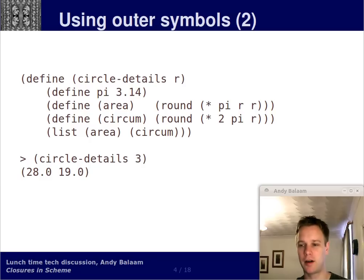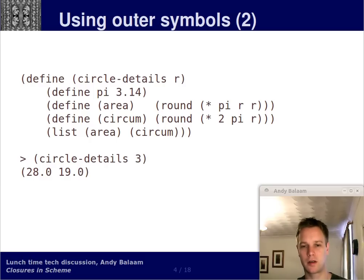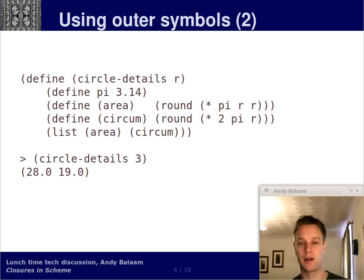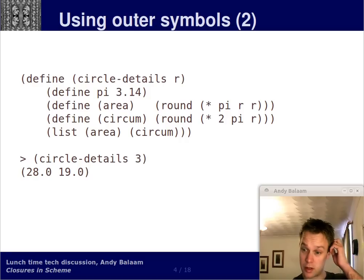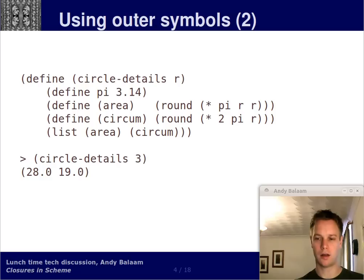We've also got a procedure called circumference which takes no arguments and makes use of the round built-in procedure, the pi symbol, and the r symbol, just like area does. Then in the body of this function, it runs the list procedure which just makes a list — and the answer we got back is a list of two things, 28 and 19. So this is another example of the fact that you can define a procedure inside a procedure which uses the symbols from the outer procedure in its body. You can also use symbols you defined within the outer function, not just arguments that were passed in — symbols like pi that were defined within that function.